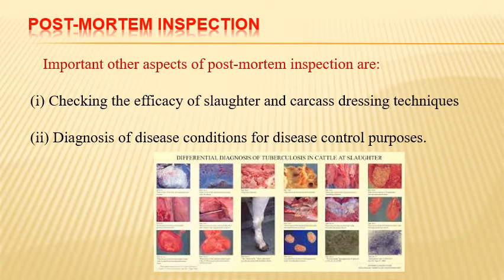Other important aspects of post-mortem inspection include checking the efficacy of slaughter and carcass dressing techniques, including enforcement of animal welfare. During post-mortem inspection, we can detect inhumane handling or cruelty done to the animal — different kinds of injuries — through which we can enforce the implementation of animal welfare aspects. Secondly, diagnosis of disease conditions for disease control purposes, wherein we can detect many important contagious diseases and give the proper message to the respective authorities for disease control programs.